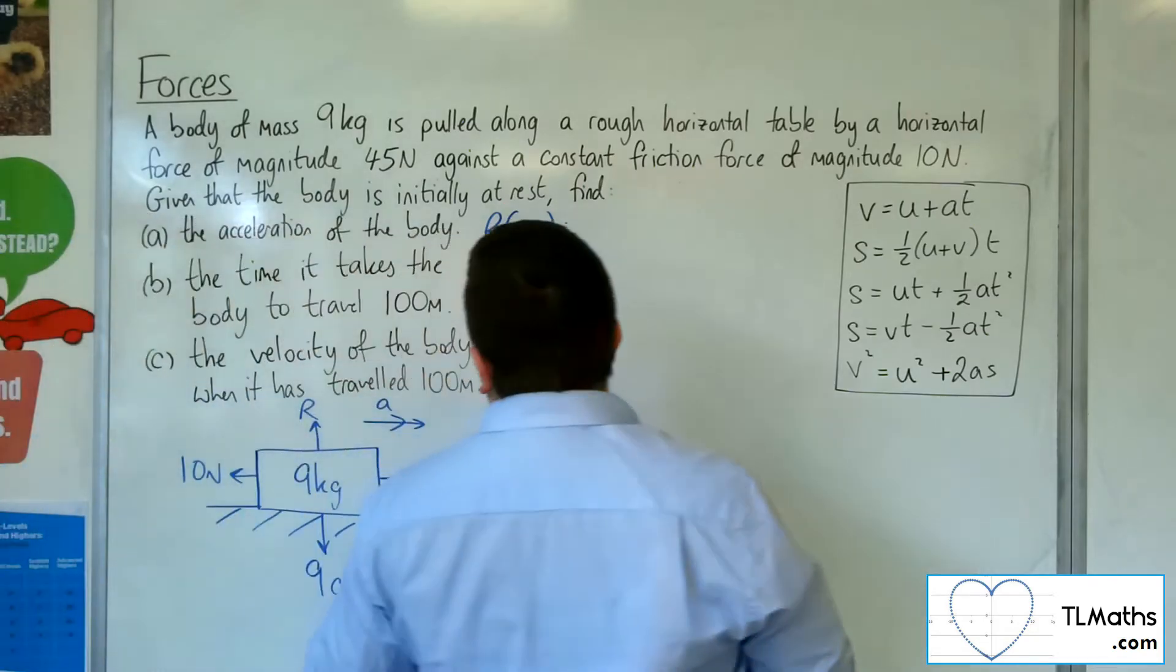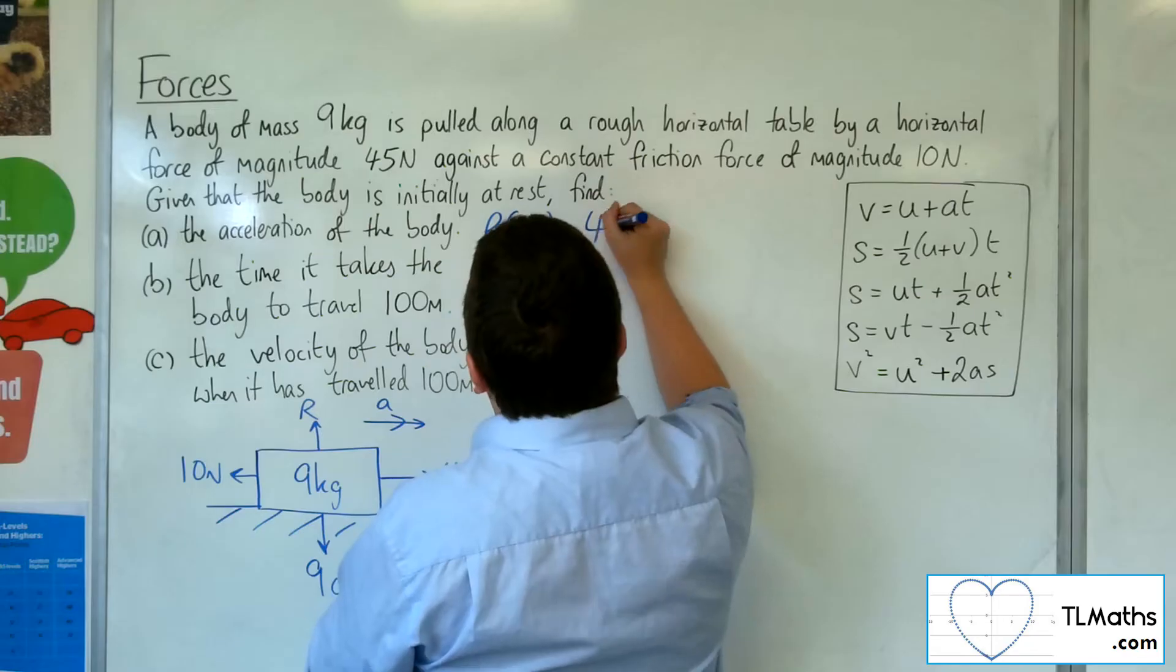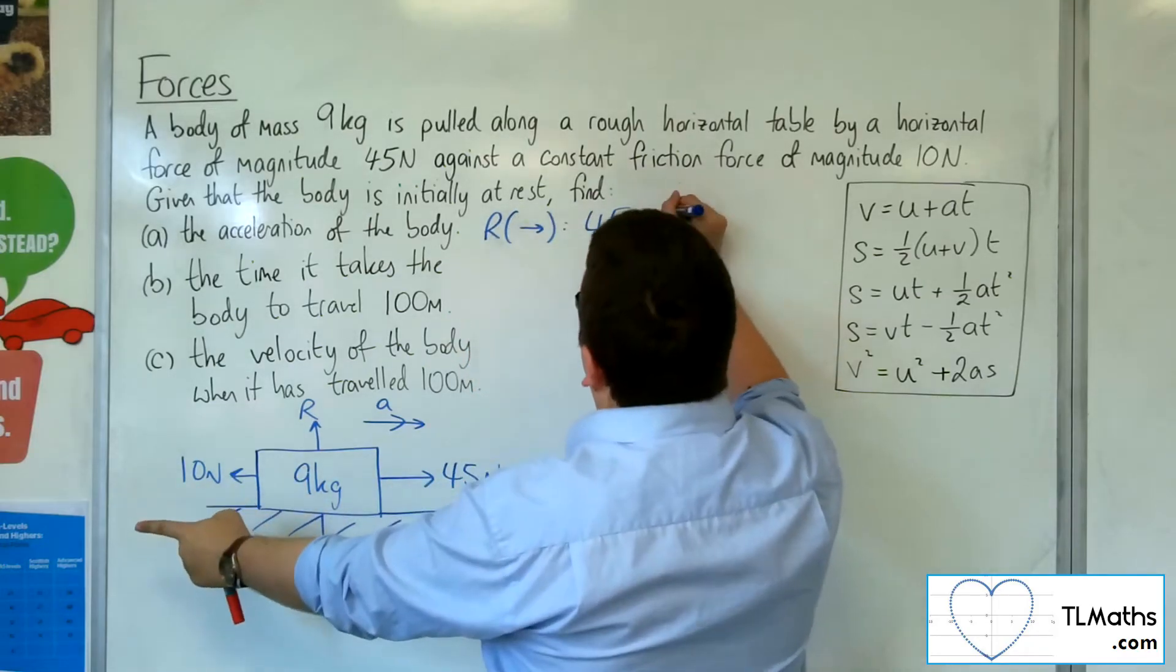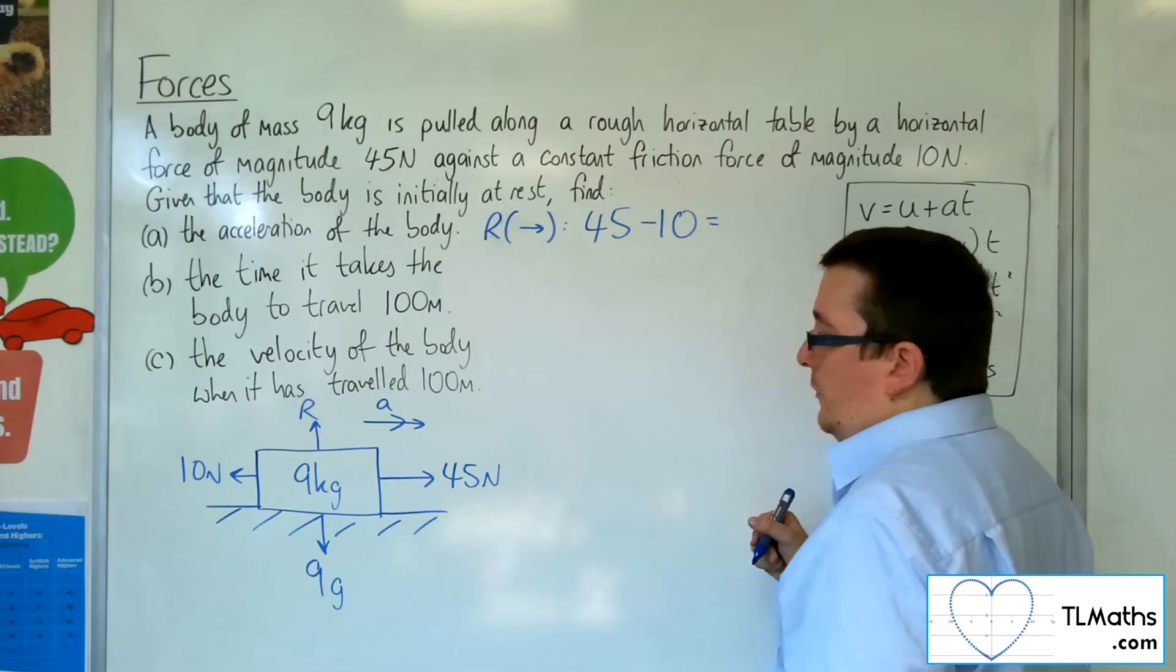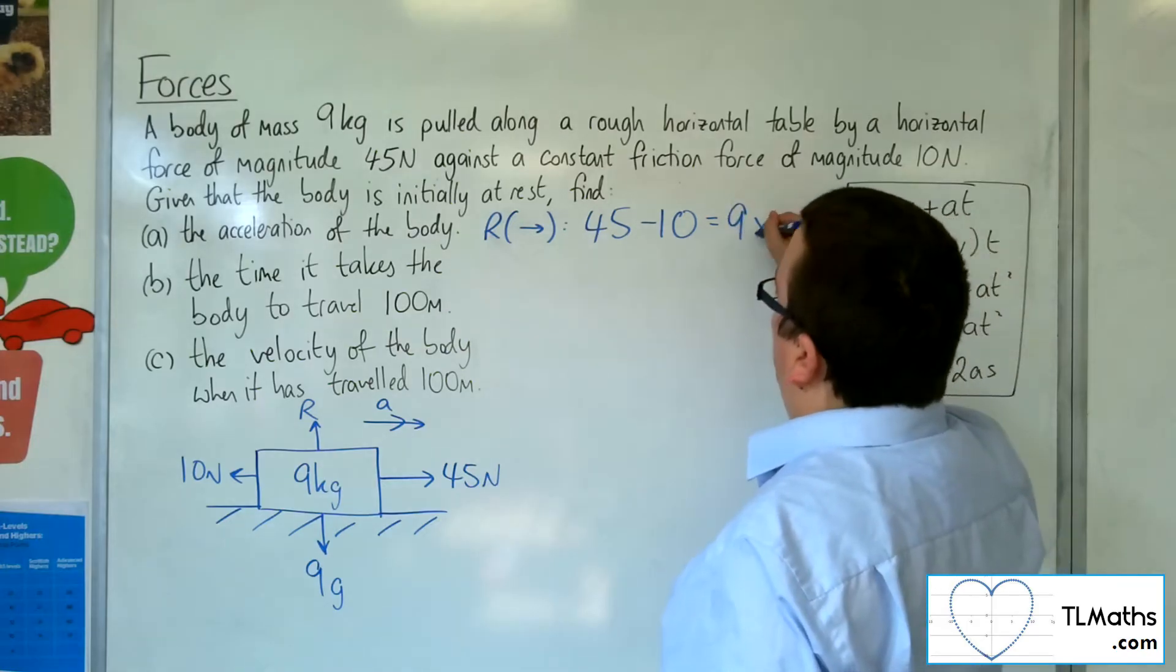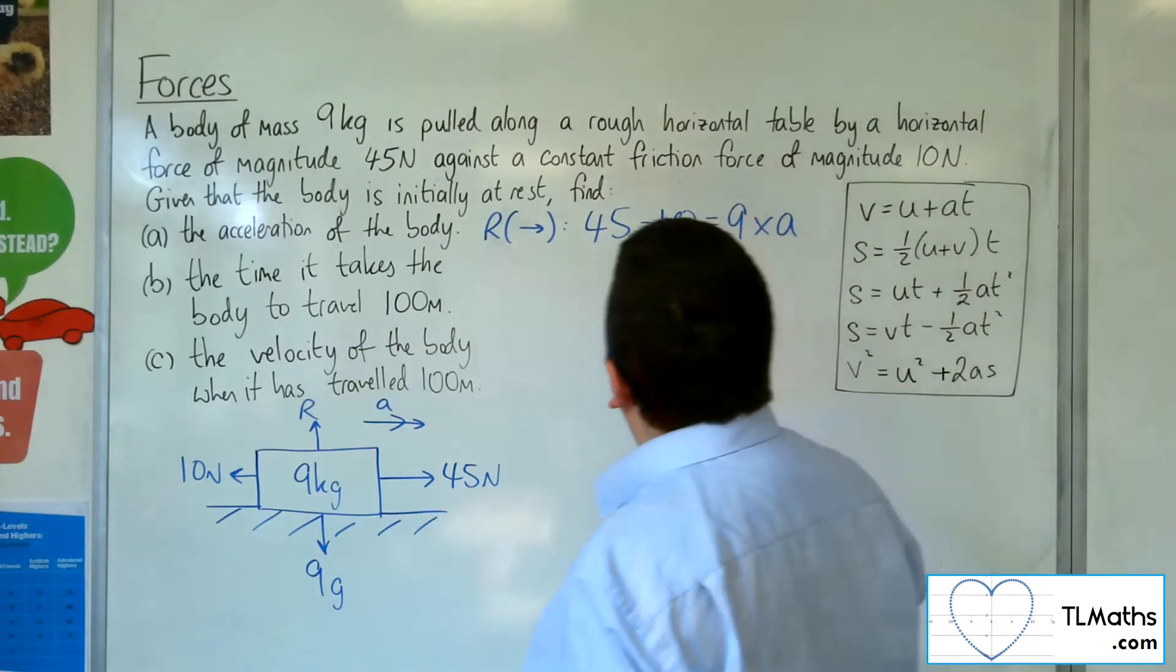So we've got the net force, 45 working this way, 10 newtons working that way, is equal to mass times acceleration, F equals ma.